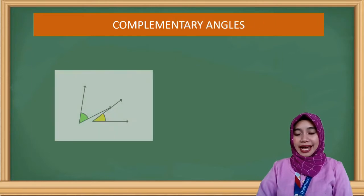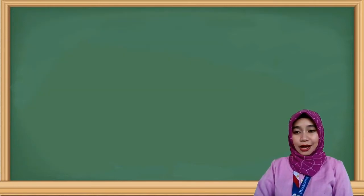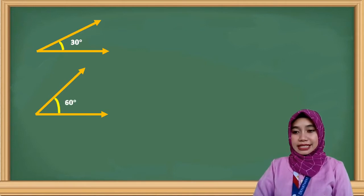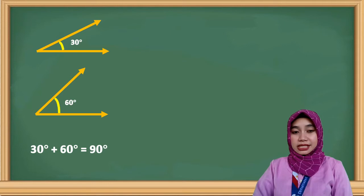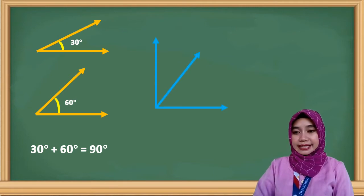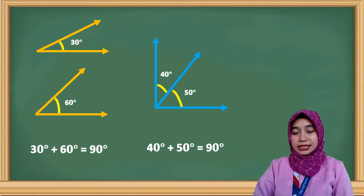Let's start with complementary angles. Two angles are complementary if their sum is 90 degrees. For example, we have an angle of 30 degrees and an angle of 60 degrees. If you add them, they sum up to 90 degrees, because 30 degrees plus 60 degrees equals 90 degrees. Therefore, the 30-degree and 60-degree angles are complementary angles. Another example: 40 degrees plus 50 degrees equals 90 degrees. Therefore, these two angles are complementary.